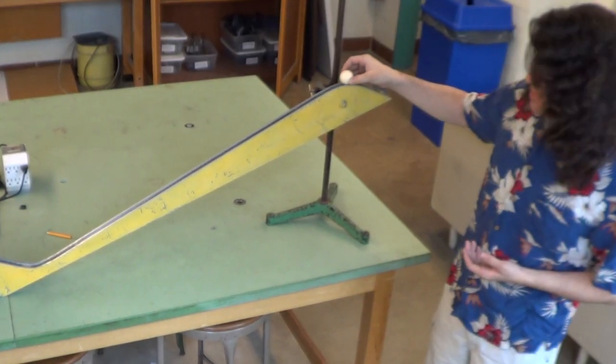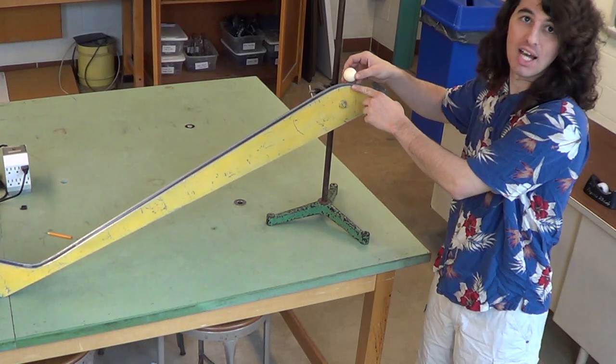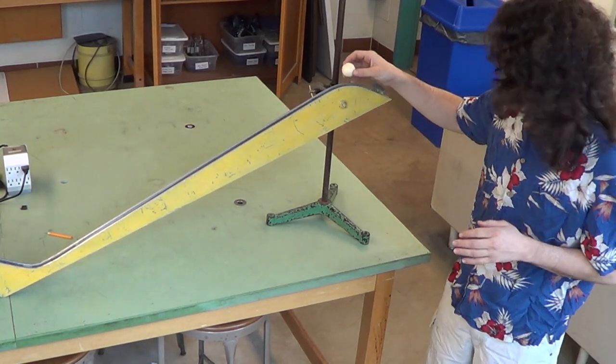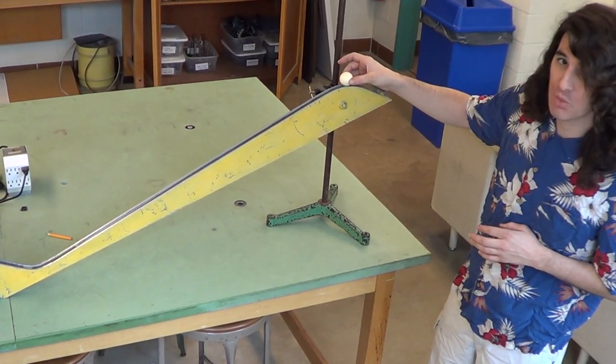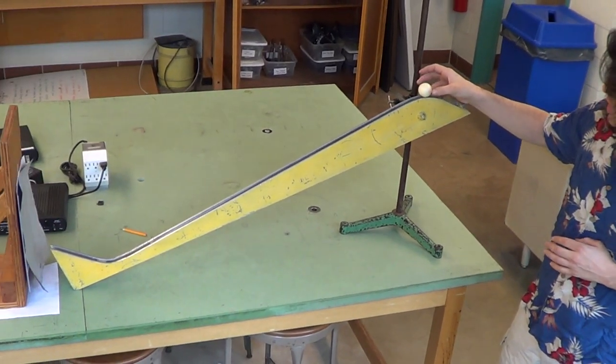We place the ball at the same point, which we have marked at the top, so we know where to start from each time. And we place it and try to release it in such a way that we don't push it forward.